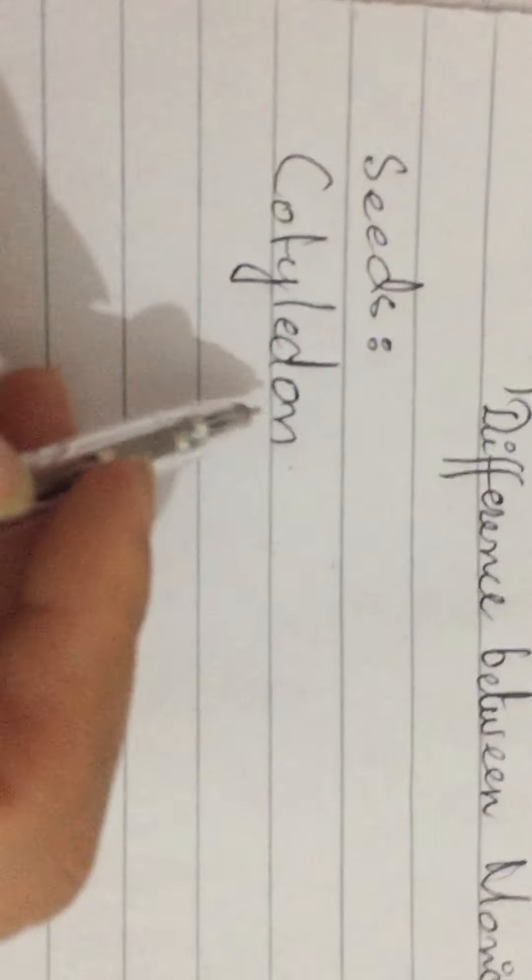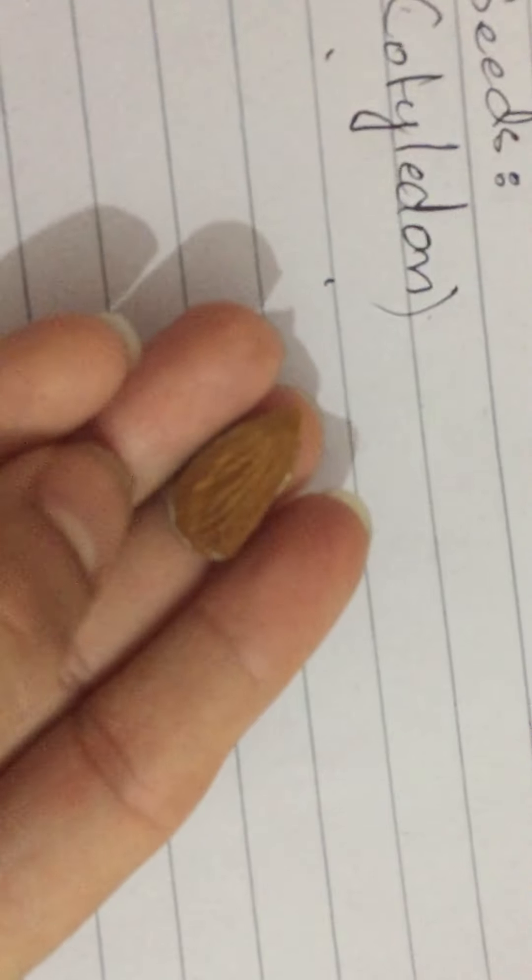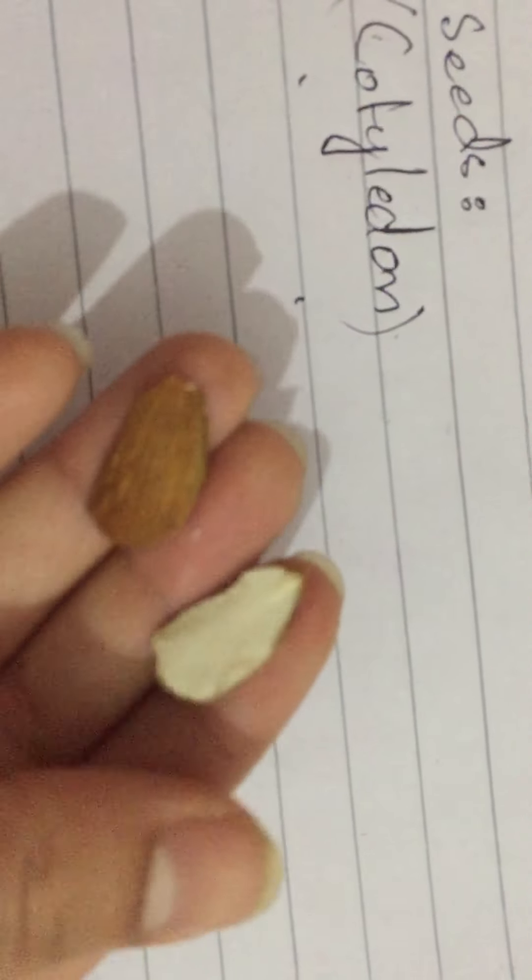This is a seed which has cotyledon. See, this is an almond seed. If I break it, then it will be divided into two different parts. This means the almond seed has two cotyledons. There are two parts of it. Clear? Cotyledon.